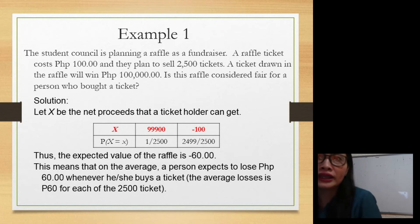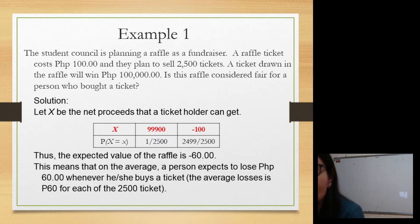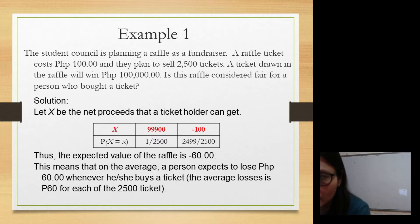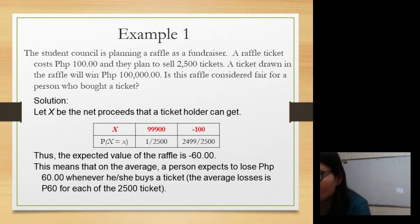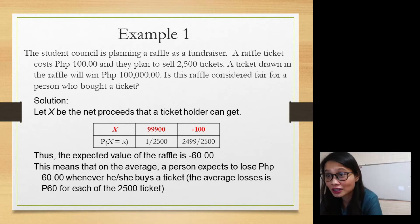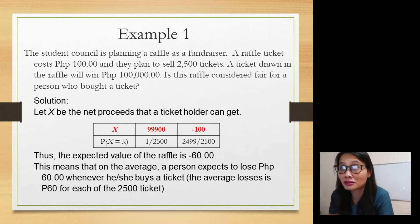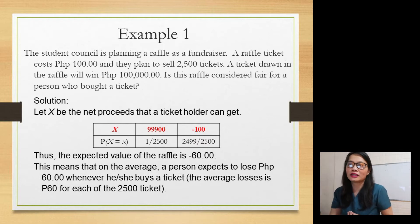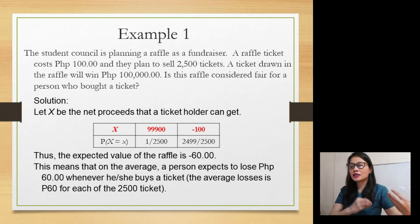So whenever a person buys a ticket, they will lose 60 pesos on average. The average loss is 60 pesos per ticket out of 2,500 tickets. You have 40 pesos for the winning side. So you lose 60, you gain 40. Unless you buy all 2,500 tickets — then there is a guarantee you can have the 100,000. But if you buy one ticket costing 100, you have a 60 pesos expected loss. That is expected value.